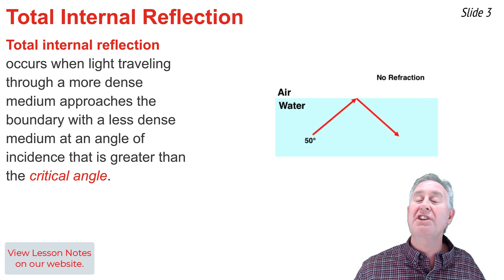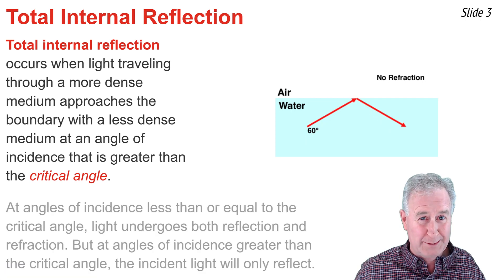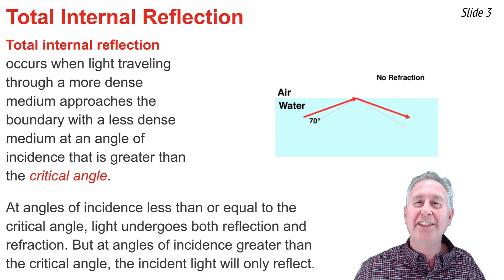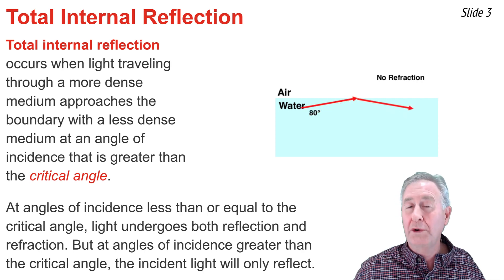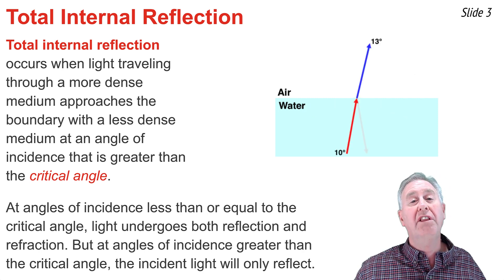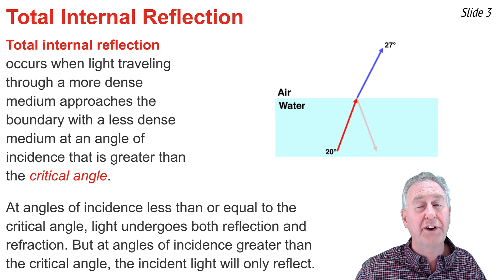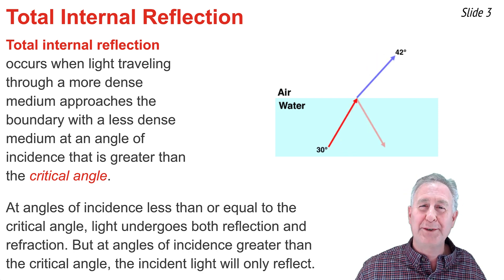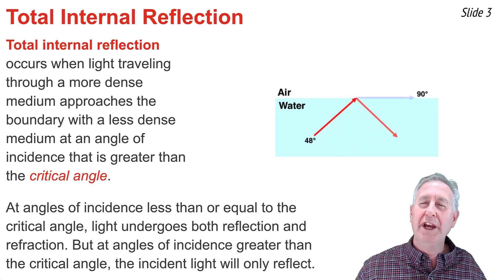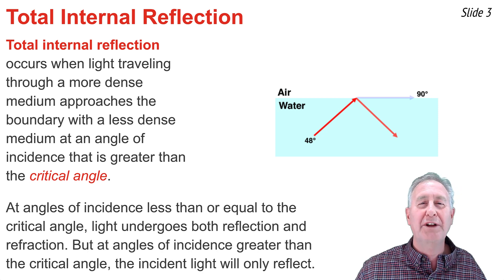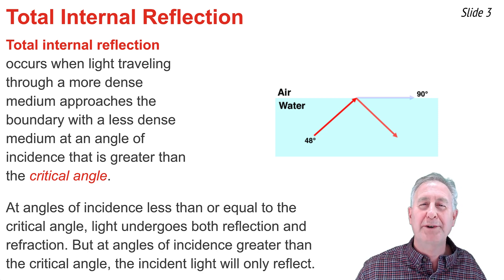The answer is nothing happens — you don't even have a refracted ray. Light that approaches that boundary now undergoes total internal reflection. All the light stays internal to the water and reflects off of that boundary. This occurs for any angle of incidence greater than the critical angle of about 48 degrees for the water-to-air boundary.